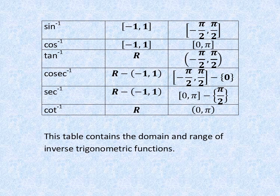Let us recall once again that we have six inverse trigonometric functions: sine inverse with its principal branch range as minus pi by 2 to pi by 2, cos inverse 0 to pi, tan inverse minus pi by 2 to pi by 2, cosec inverse minus pi by 2 to pi by 2 excluding 0, sec inverse 0 to pi excluding pi by 2, and cot inverse 0 to pi. These are the principal branch ranges of inverse trigonometric functions.